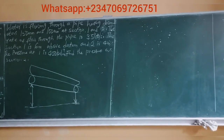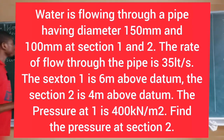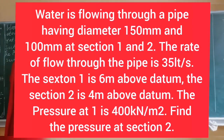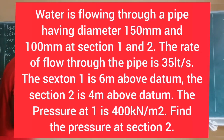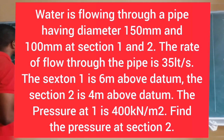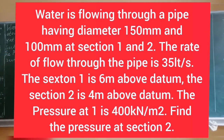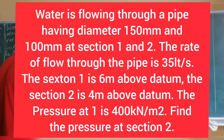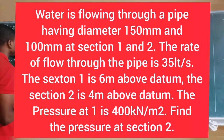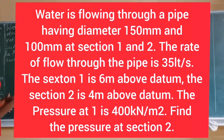Let's consider this question to explain the concept of Bernoulli's equation. Water is flowing through a pipe having diameters 150 mm and 100 mm at section 1 and 2. The rate of flow through the pipe is 35 liters per second. Section 1 is 6 meters above the datum and section 2 is 4 meters above the datum. The pressure at section 1 is 400 kN per meter square. Find the pressure at section 2.